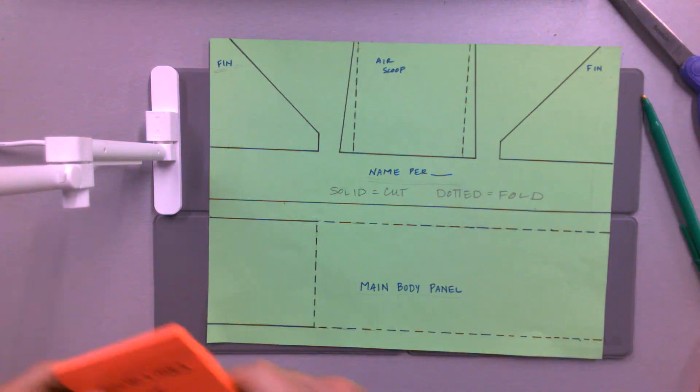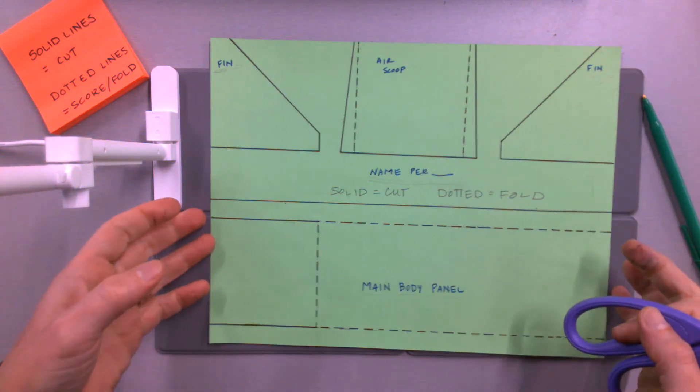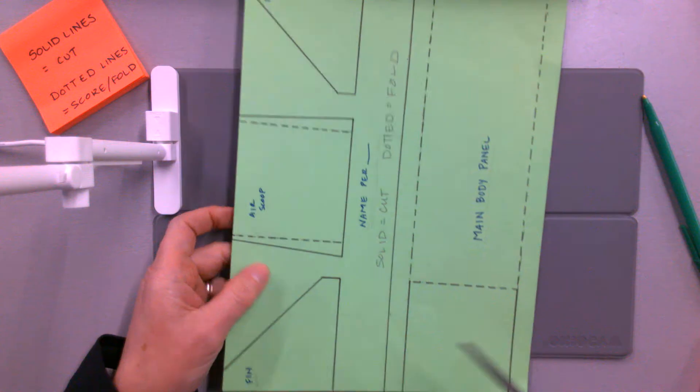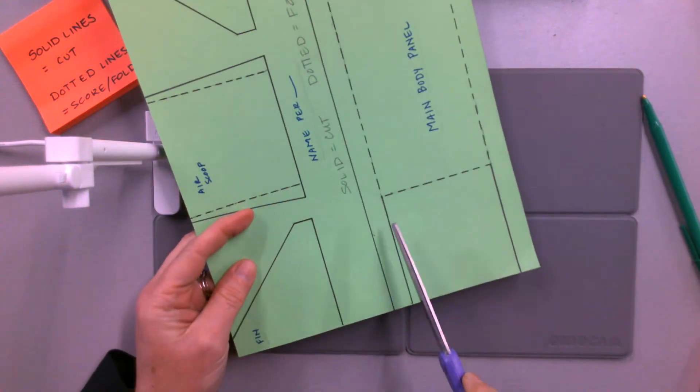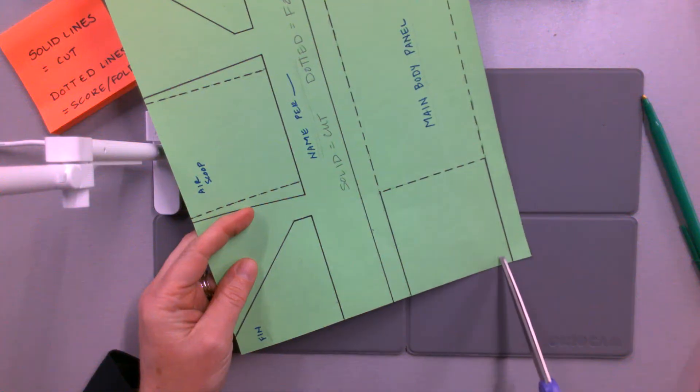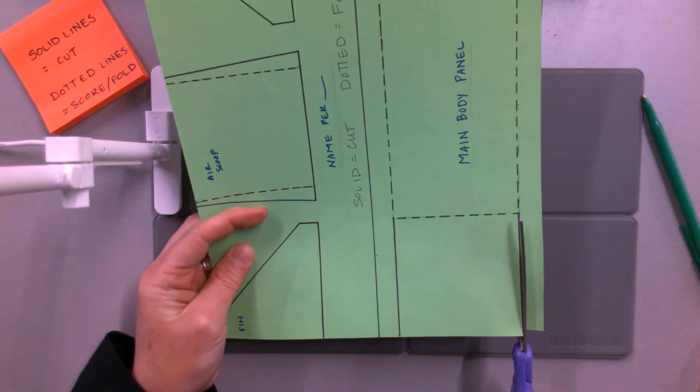These techniques are things we do with all the rapid prototypes we make this year. You're going to note that these are all solid lines. These solid lines you're going to cut, and you're going to stop right at the dotted line.